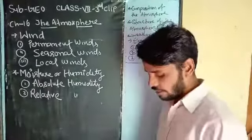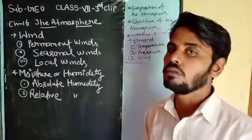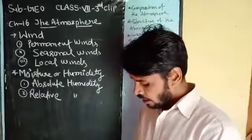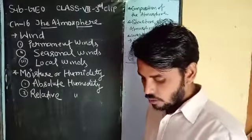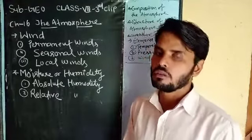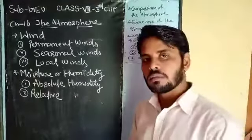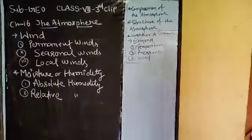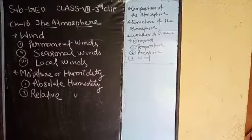इस chapter का एक last topic है — precipitation, it means rainfall। यह तीन तरह के हैं: convectional, orographic, और cyclonic rainfall। उन तीनों rainfall को अगले clip में देख लेंगे। आज के लिए बस इतना ही, धन्यवाद।